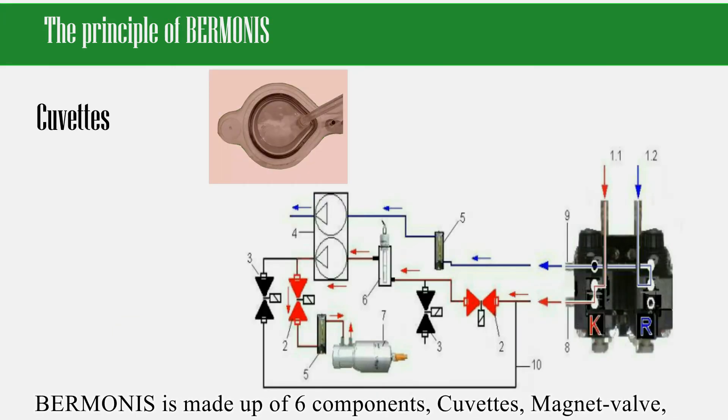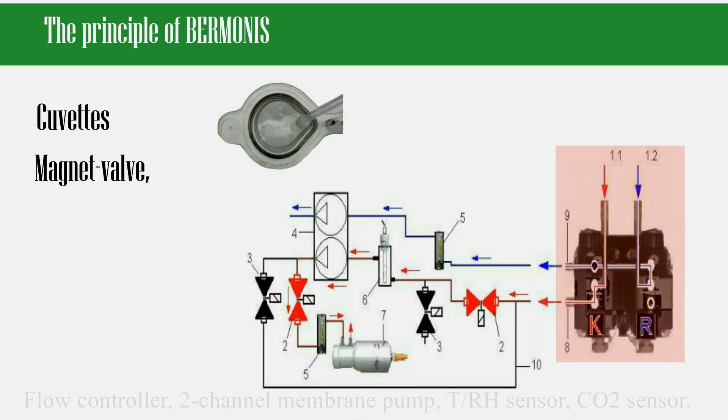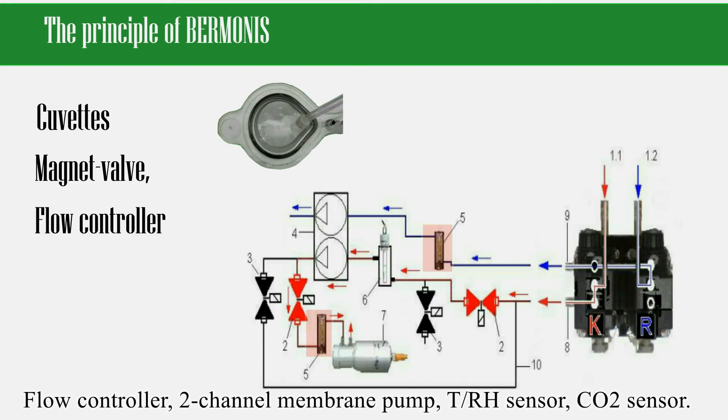BERMONIS is made up of six components: cuvettes, magnet valve, flow controller, two-channel pump, the temperature and relative humidity sensor, and of course the most important CO2 sensor.